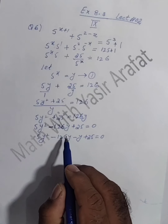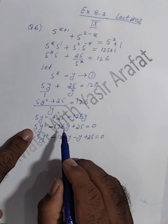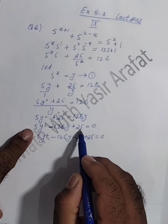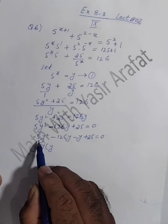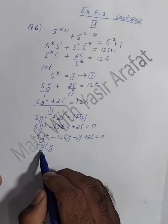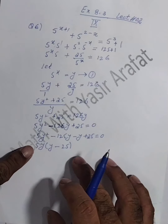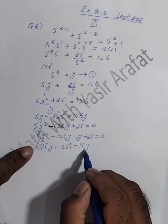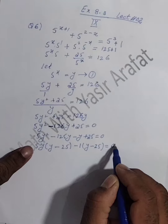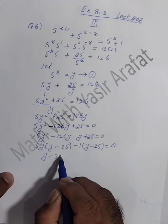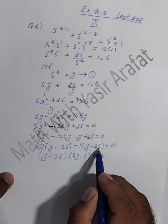If you have any difficulty breaking the middle term, just apply the quadratic formula to find the value of y, where a = 5, b = -126, and c = 25. Now 5y can be taken as common, giving 5y(y - 25), and taking out common from the remaining terms: (y - 25)(5y - 1) = 0.